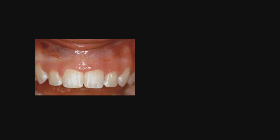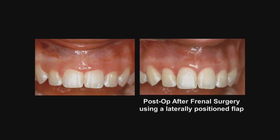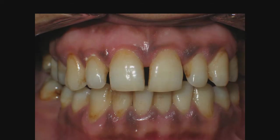We've done a laterally positioned flap, which is on another video, to get rid of the frenum, but you'll notice that we have uneven gingival form. So using the radiosurgery, we went in there and contoured that tissue.